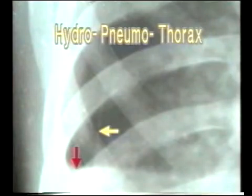Now inspect the peripheral zone. Above the fluid level, we see the peripheral band of radiolucency due to air, and below it is the opacity due to the fluid. This is Hydro-Pneumothorax.